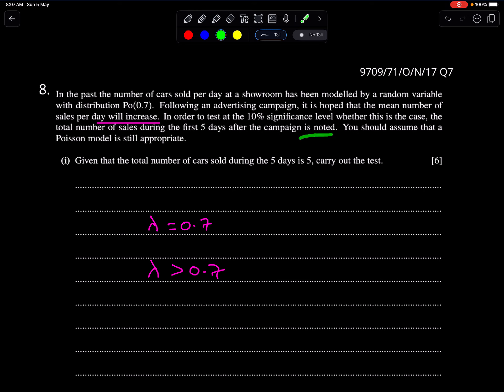In order to test whether this is the case, the total number of sales during the first 5 days after the campaign is noted. So we just need to check sales for 5 days. Lambda is 3.5. This is the claim, and we want to check this.